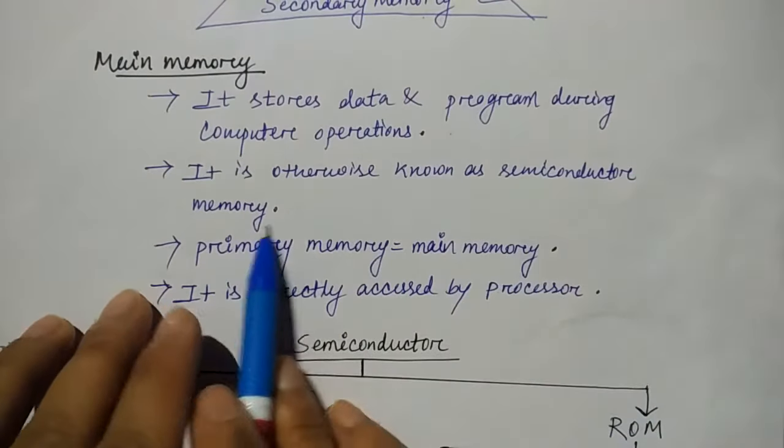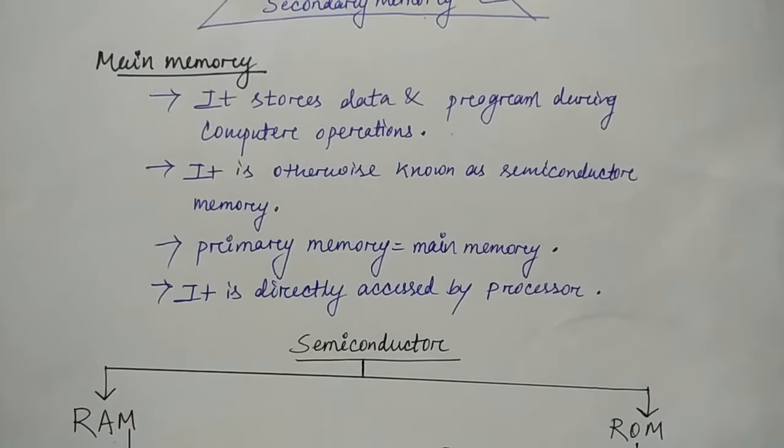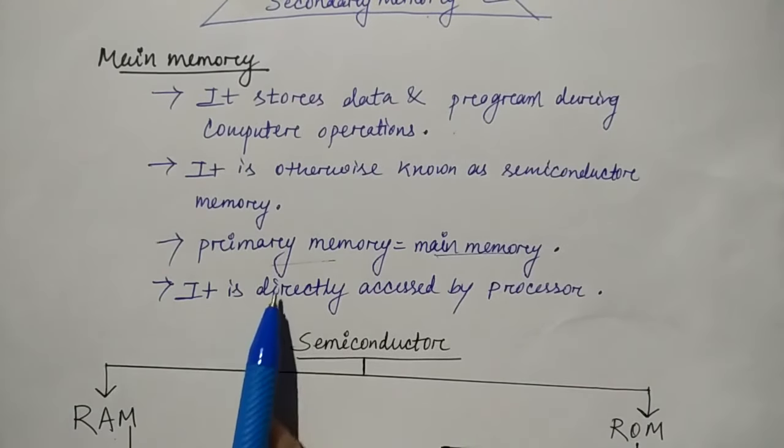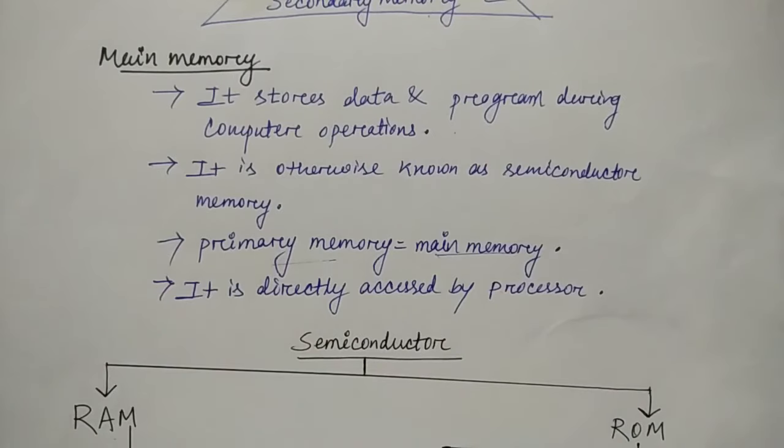It is otherwise known as semiconductor memory because semiconductor techniques are used here. Main memory is also known as primary memory, and it is directly accessed by the processor.